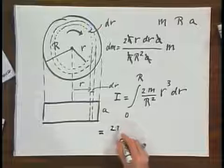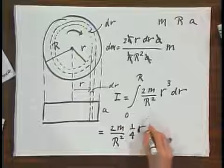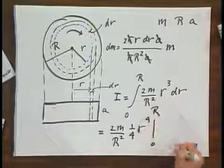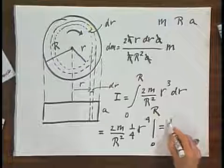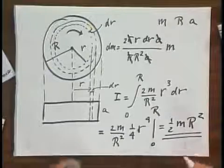I get 2m divided by R² times r³ dr. This integral becomes 2m divided by R² times one-fourth r to the fourth, evaluated from zero to capital R, and that becomes one-half mR². This is a very well-known result. You can find in any book when you look at the tables that the moment of inertia of a cylinder about its axis of symmetry, if the mass is uniformly distributed throughout the cylinder, is one-half mR². Don't remember it, but it can be derived, and it's not all that difficult to derive.